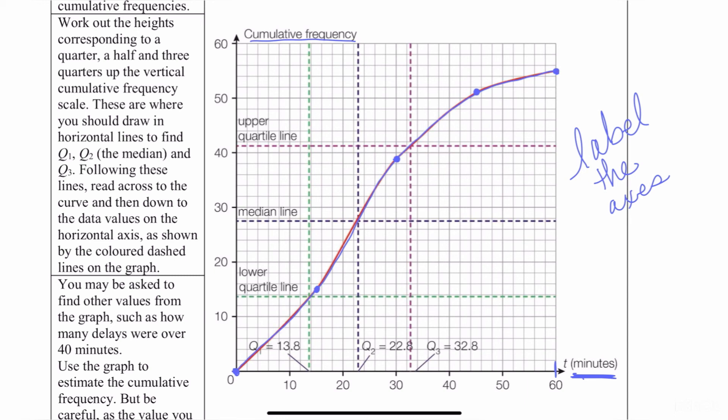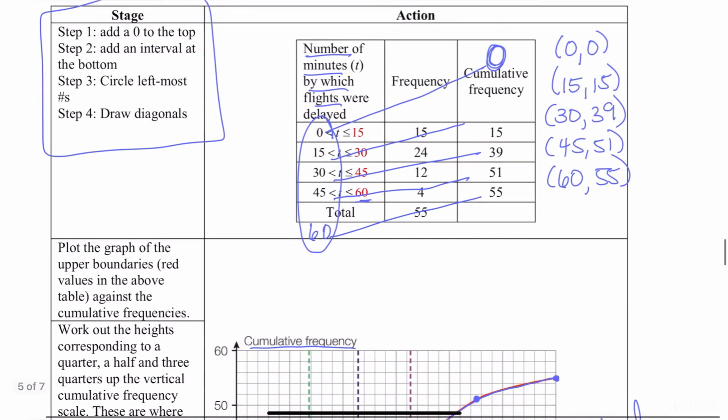In another video, I'm going to show you what to do with this cumulative frequency curve. What is it used for? But for now, I just want to show you how to actually make one. So again, to backtrack, there's four steps. Add a zero to the top. Add an interval to the bottom, which in reality, I only care about that left number. Circle the leftmost numbers and draw the diagonals. That tells me the ordered pairs that I'm going to be using.